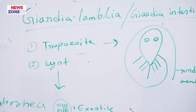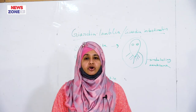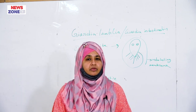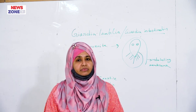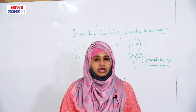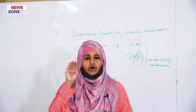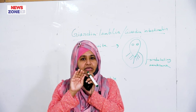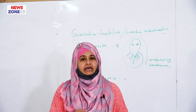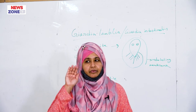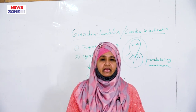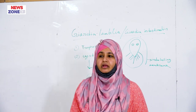Cysts of Giardia enter the stomach via contaminated food or drinking water. In the stomach, gastric juice dissolves the cyst wall and trophozoites emerge. The trophozoite, which has a concave ventral surface, attaches to the lining epithelium of the intestine, causing irritation of the intestinal surface and diarrhea.